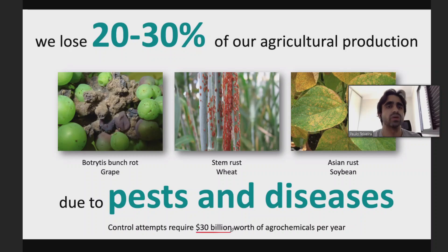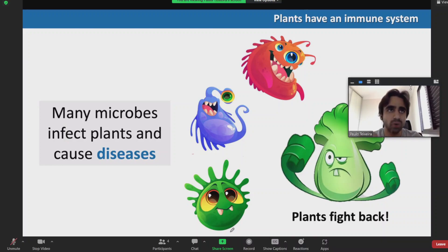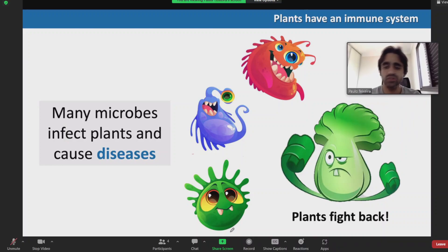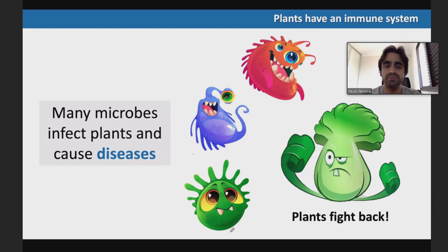Every single plant we grow in agriculture has at least one important pathogen. But plants are much more than mere substrates for microbes — they actually fight back. They have an immune system that evolved to perceive potential invaders and resist and block their development. And to be honest, this immune system works most of the time, so plants are resistant to most microbes that may attempt to colonize them. But sometimes plants do get sick — so the question is why. What happens when successful colonization is achieved?